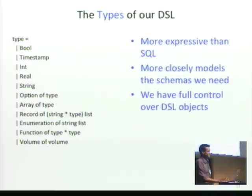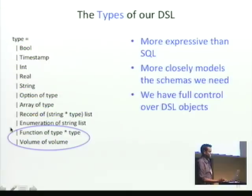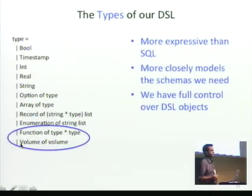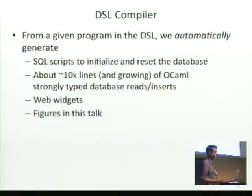The types of our DSL are quite simple. Most of the data types are quite straightforward. The only really interesting ones are: we have a function type, and since we're dealing with so many files, we're providing an explicit type that represents file system objects. That gives us more precise control over keeping track of our millions of files.